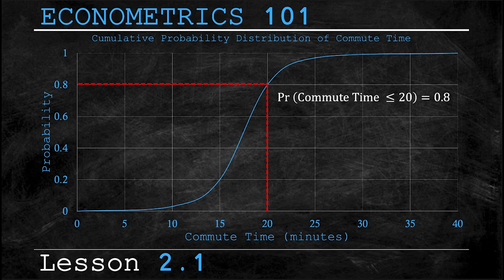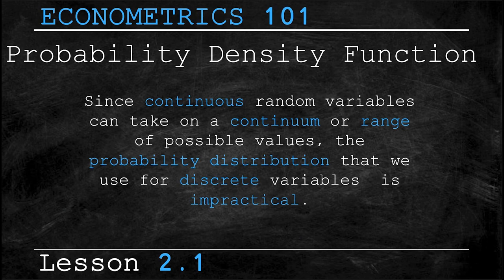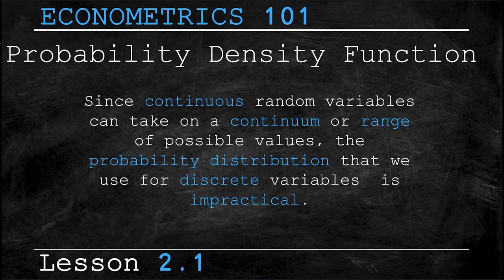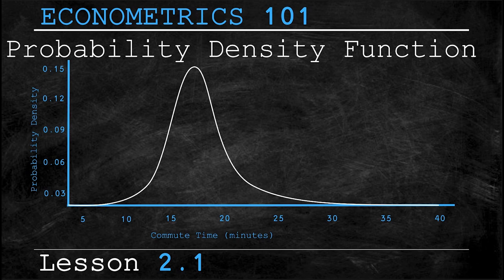Now it's worth noting that since continuous random variables take on a continuum or range of possible values the probability distribution that we use for discrete variables is impractical. So that beautiful bar graph that we used earlier well it's absolutely useless for continuous variables. Instead we use something called the probability density function or PDF.